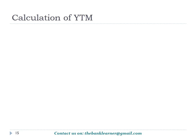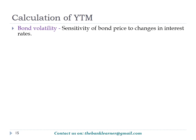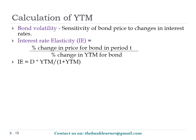Other terms in this chapter include bond volatility, which represents the sensitivity of bond price to interest rate fluctuations. Interest rate elasticity is the percentage change in the price of a bond relative to the percentage change in the yield to maturity of the bond. It is calculated as: Duration × (YTM / (1 + YTM)).